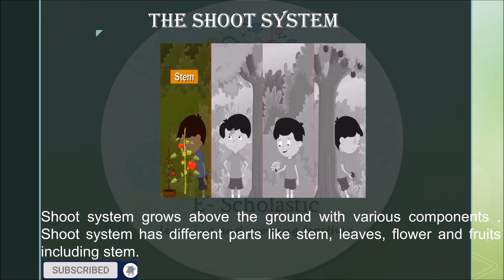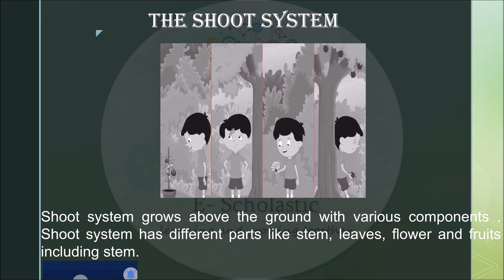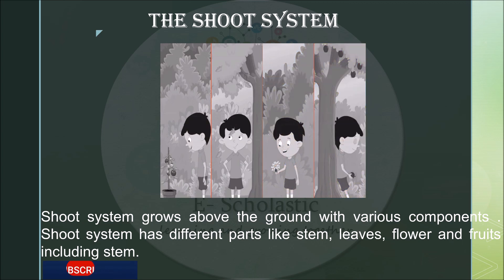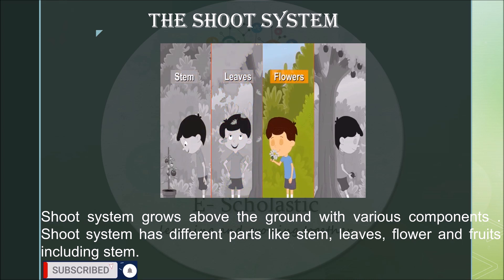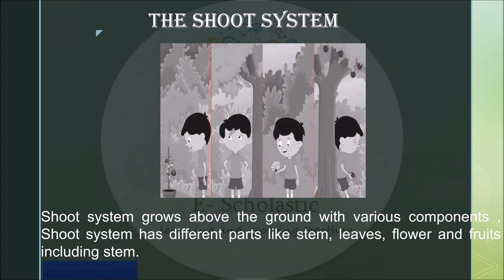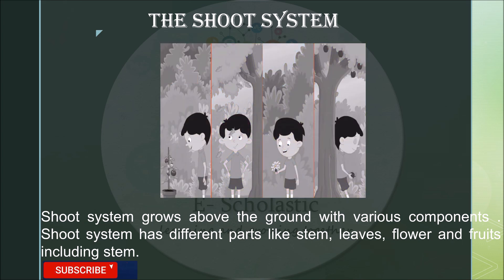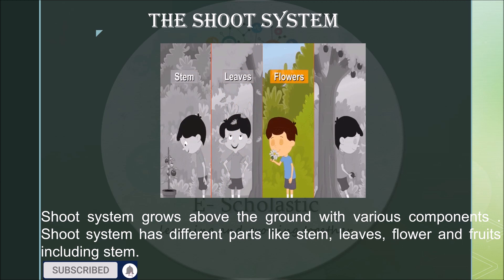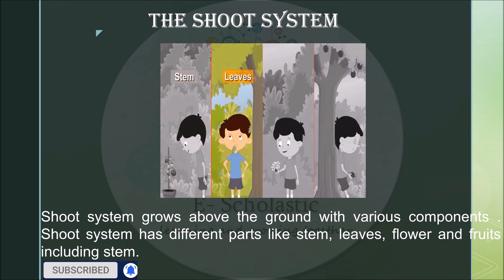The shoot system is a system that grows above the ground and has various important components. The parts that grow on the shoot system are stem, leaves, flower, and fruit. All these are the important components of the shoot system. Let's try to understand each of these different parts in detail.